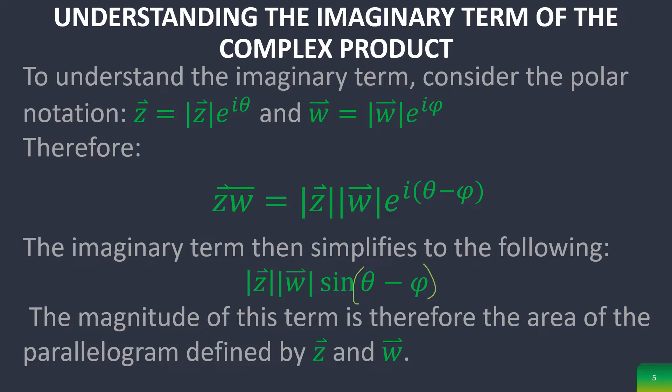So let me just visualize that real quick. If you have a plane, a complex plane right here, and then you have a vector here and a vector here, and we'll say that this is vector z and this is vector w. Well, note that it forms a parallelogram right here.